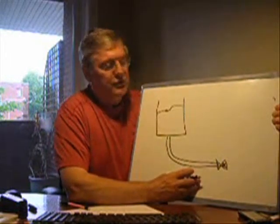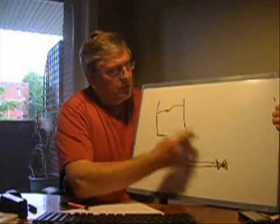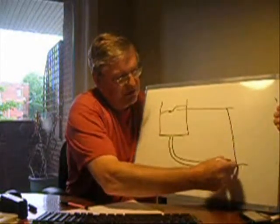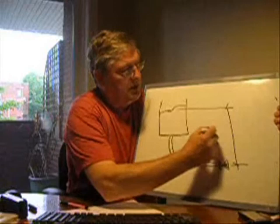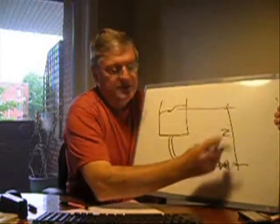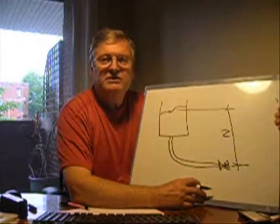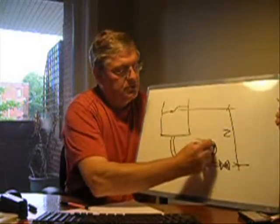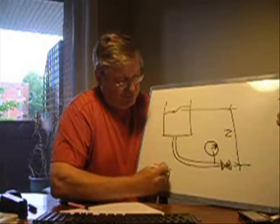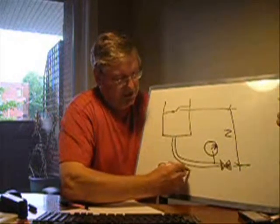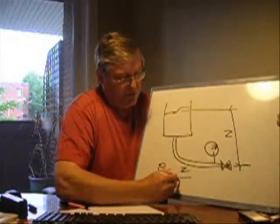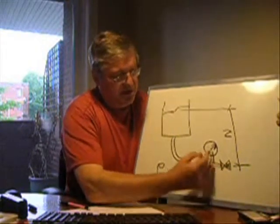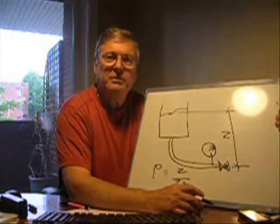That definition works well for us too. We would call this static head — taking the two heights and subtracting them, labeling that Z. If I wanted to know the pressure at a point, I could put a gauge there, and the pressure would equal Z, the height measured, divided by 2.31. Or if I had the pressure but not the height, I could calculate the height, since height can sometimes be difficult to measure directly.